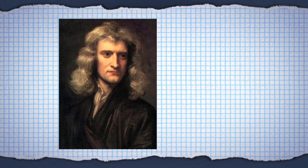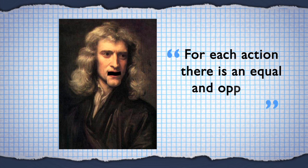You know that whole, for each action there's an equal and opposite reaction thing? It's one of the foundations of classical physics, and it means that your results are based on the input. How do you get randomness from that? Cue the wacky, wild, and oh-so-random world of quantum physics.